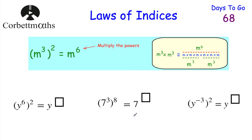Here are three questions to try — press pause now. First: Y to the power of 6 squared. Power of a power, so we multiply: 6 times 2 is 12, giving Y to the power of 12. You can verify this: squaring means multiplying by itself, so Y to the power of 6 times Y to the power of 6 adds to 12. Next: 7 cubed to the power of 8. Multiply the powers: 3 times 8 is 24, giving 7 to the power of 24. Finally: Y to the power of negative 3 squared. Multiply the powers: negative 3 times 2 is negative 6, giving Y to the power of negative 6. If you got Y to the power of 12, 7 to the power of 24, and Y to the power of negative 6 — well done.